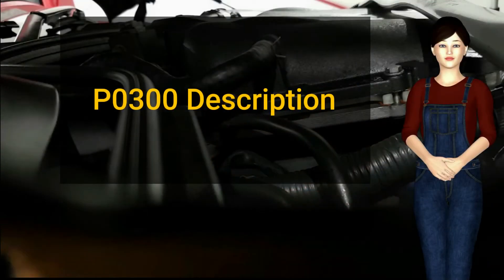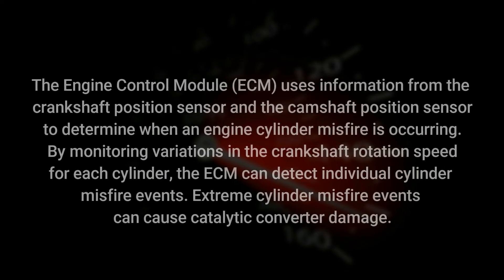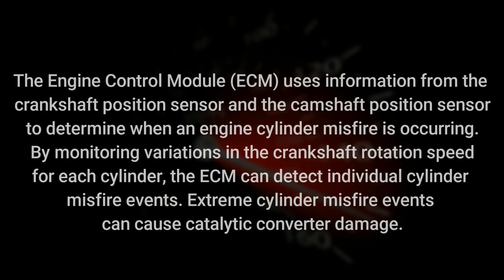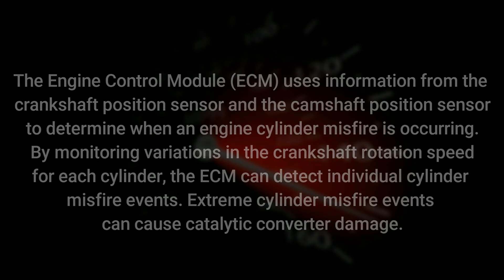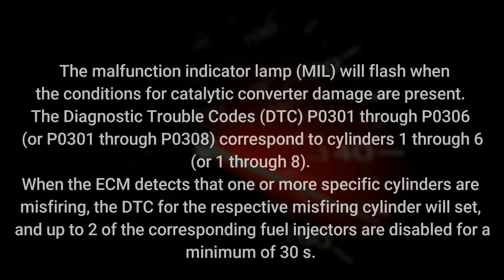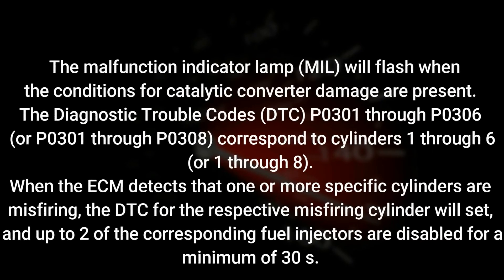Description: The engine control module (ECM) uses information from the crankshaft position sensor and the camshaft position sensor to determine when an engine cylinder misfire is occurring. By monitoring variations in the crankshaft rotation speed for each cylinder, the ECM can detect individual cylinder misfire events. Extreme cylinder misfire events can cause catalytic converter damage. The malfunction indicator lamp will flash when the conditions for catalytic converter damage are present.